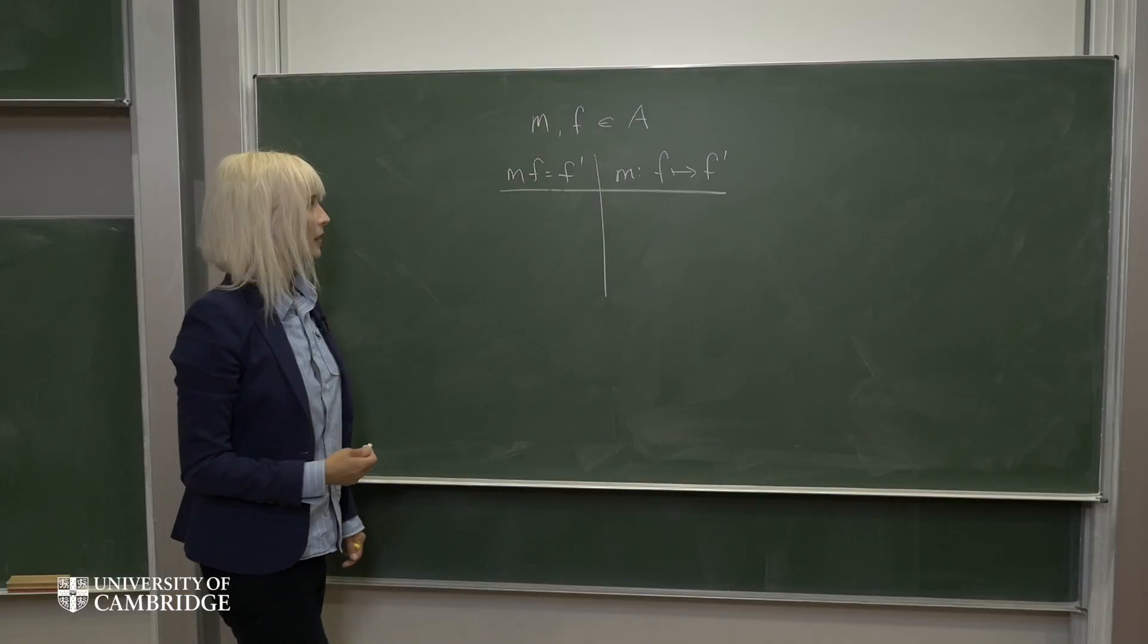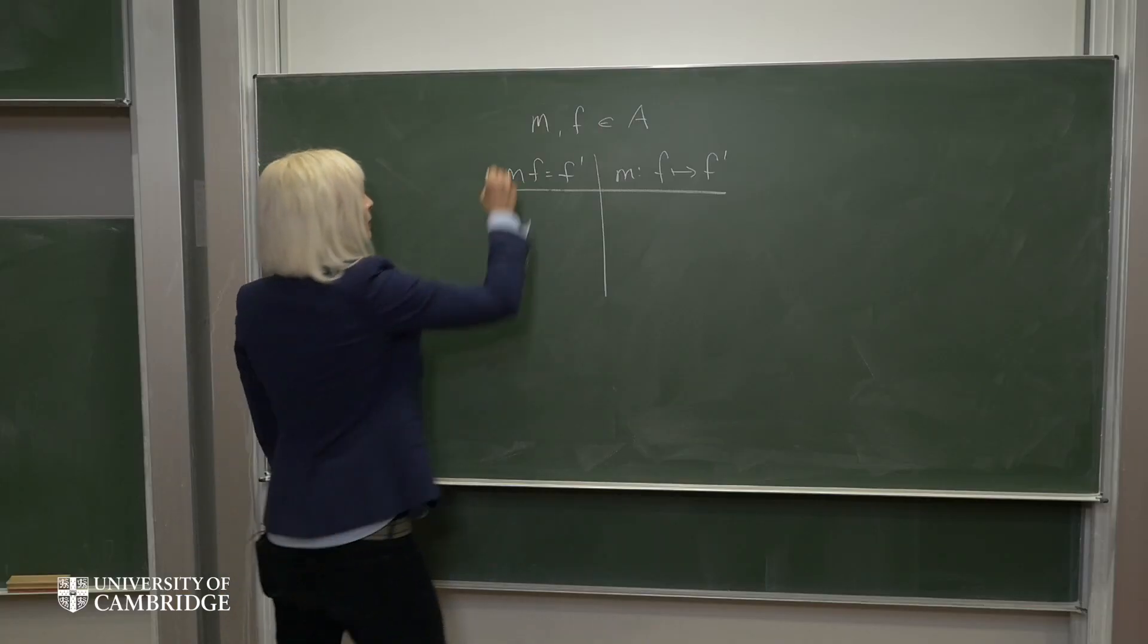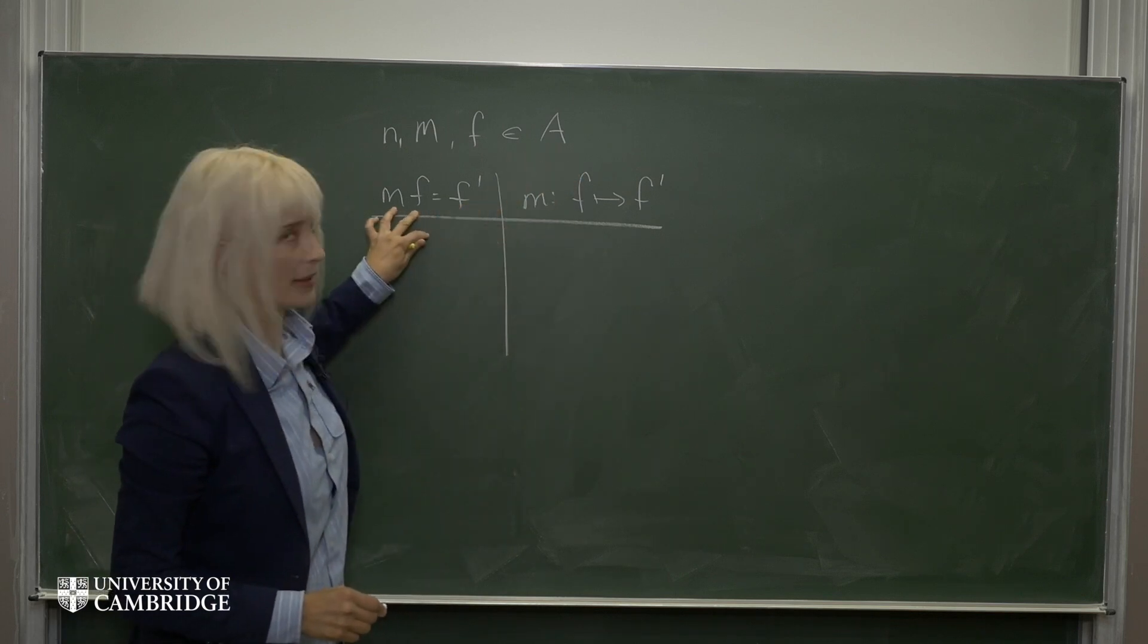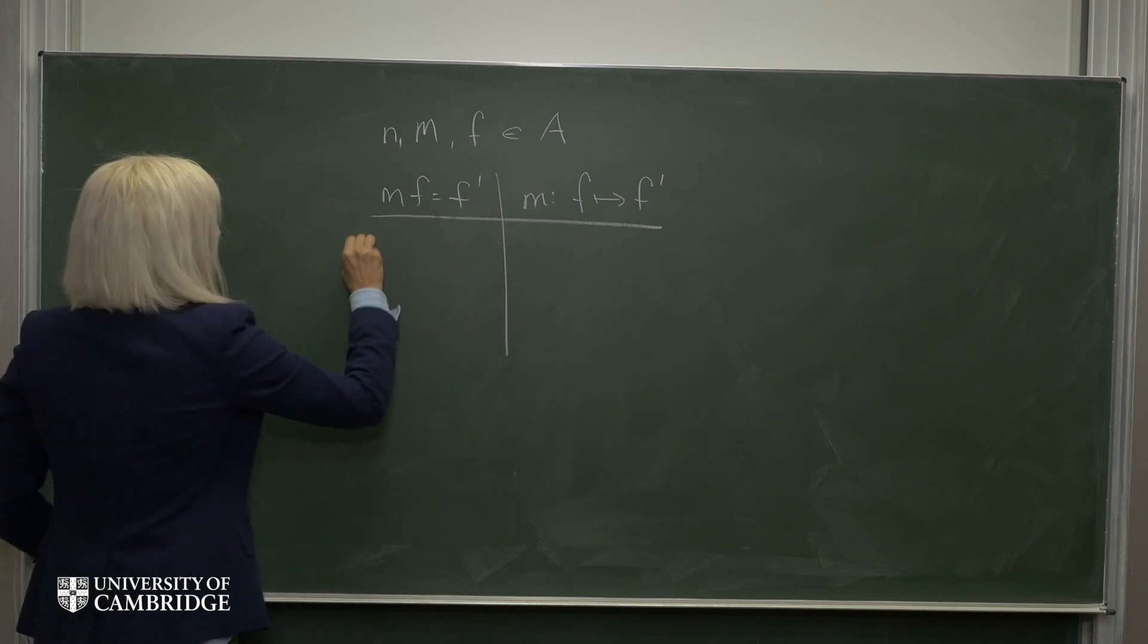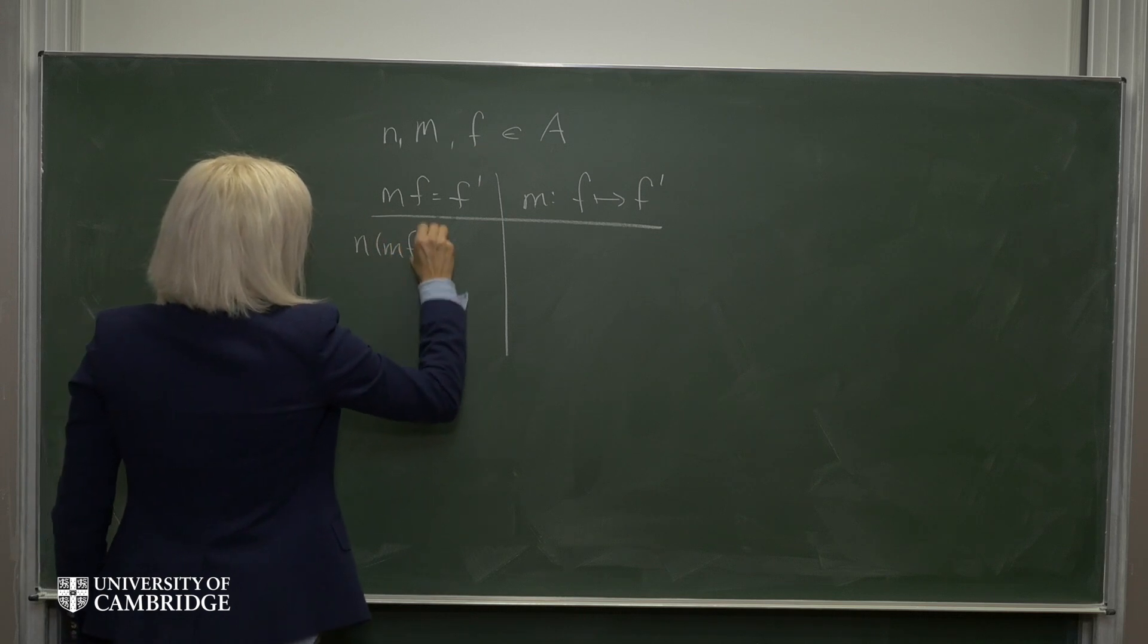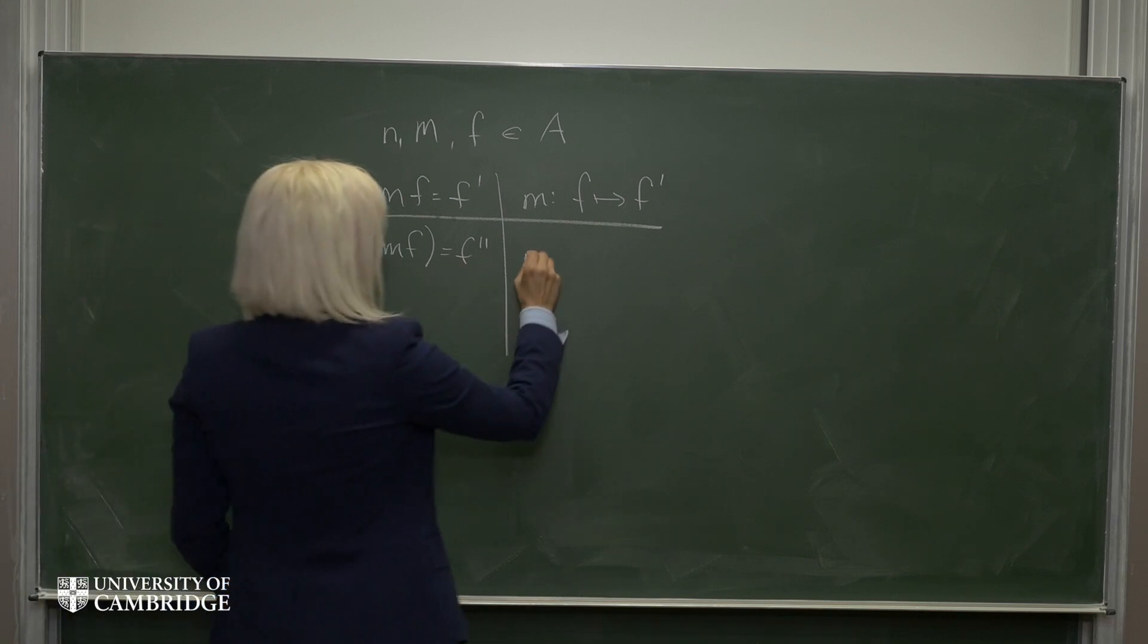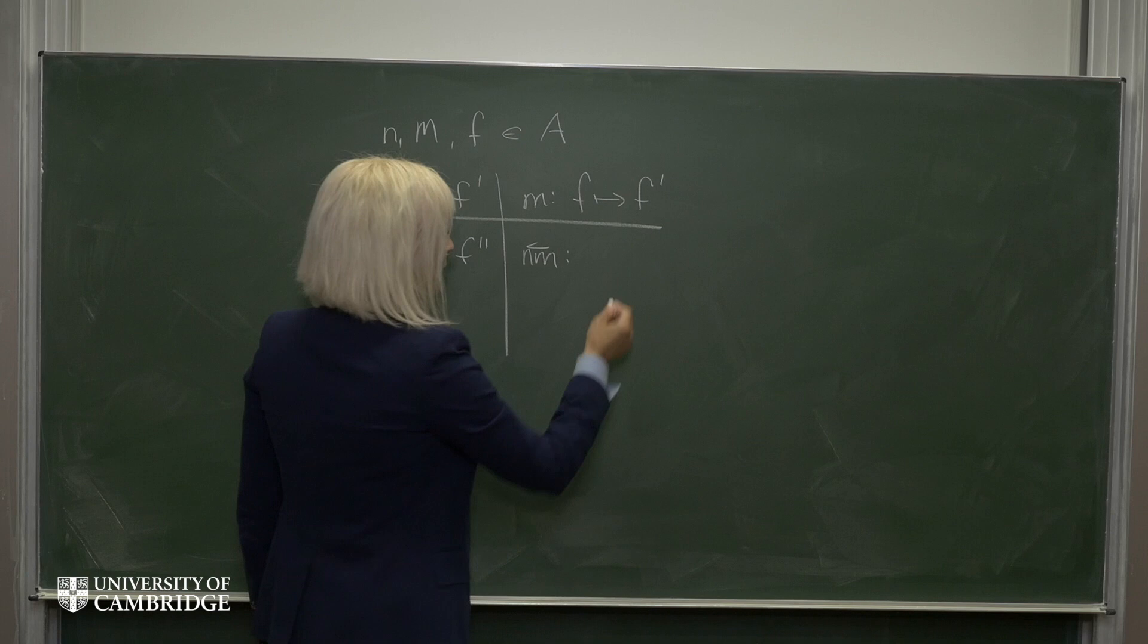But then I can do this again. So let's say we take an N, which is also an element of A, and we left multiply that onto MF. That'll give us some new F double prime, so that NM is a map from F to F double prime.